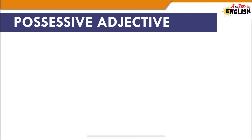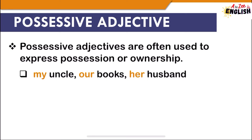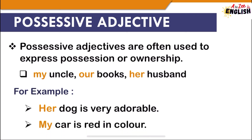The last type is possessive adjective. Possessive adjectives are used to express possession or ownership — they suggest the belongingness of something to someone. Examples include my uncle, our books, her husband. These adjectives always come before a noun. For example, 'Her dog is very adorable' and 'My car is red in color' — the nouns are dog and car, and possessive adjectives show the belongingness of that person or thing.